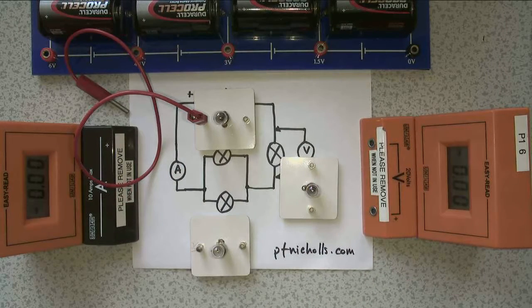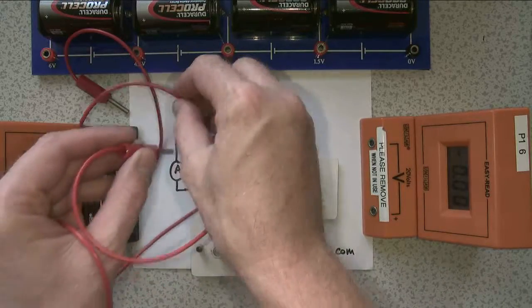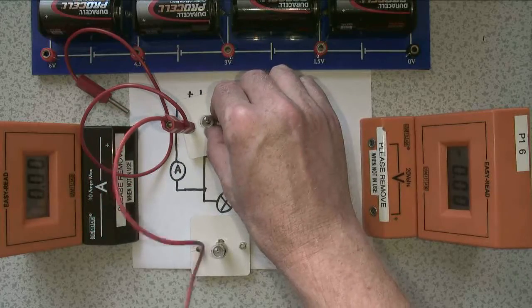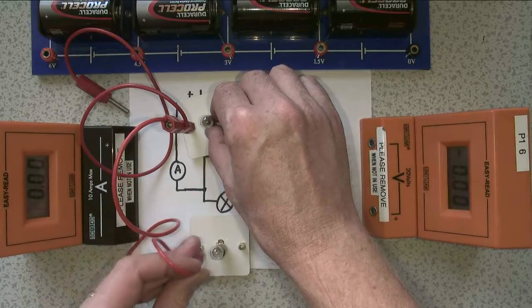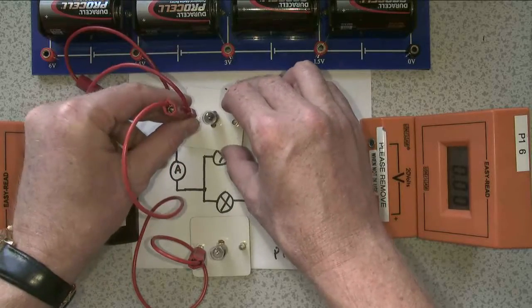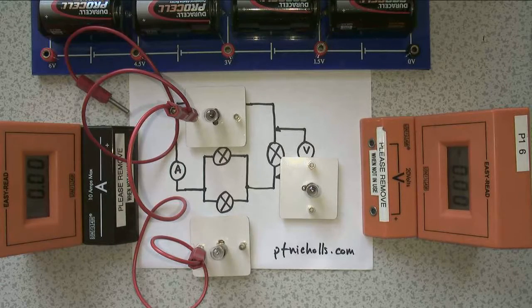I'm then going to take another red wire, and I'm going to plug it from there into the second bulb. Now what I've done here is I've been very careful to use red wires for anything which is connected to positive. That way, when I look at my circuit, I'll know the red wires must be connected to positive. I'm not going to use red wires for anything else.